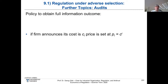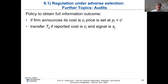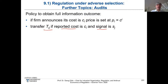What does a policy look like to obtain full information? The regulator asks the firm what its costs are. If the firm announces costs are C_H, the regulator sets price P_H = C_H and pays a transfer — which might also be negative — conditioned on both the reported cost and the signal. The notation T_IJ means the firm reported costs C_I and the signal was C_J.